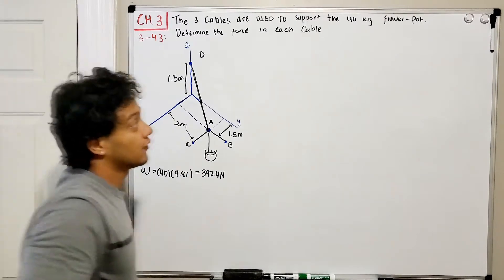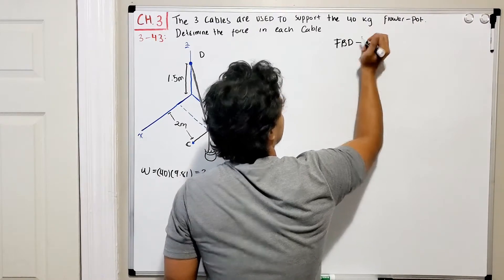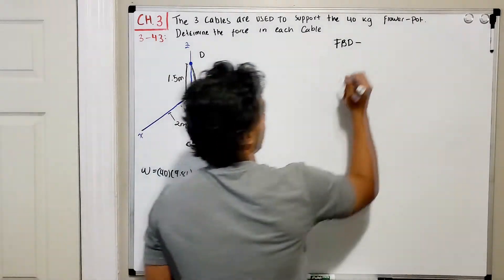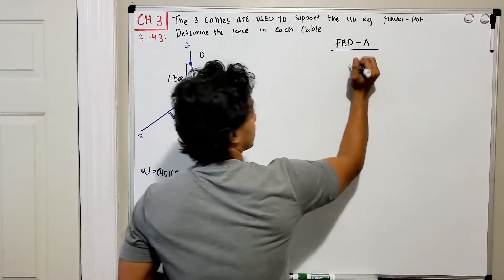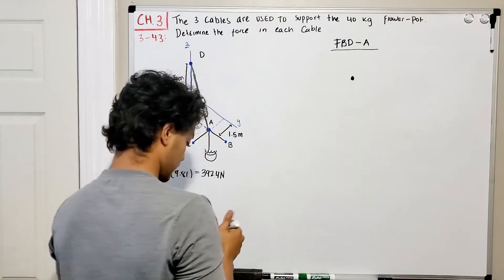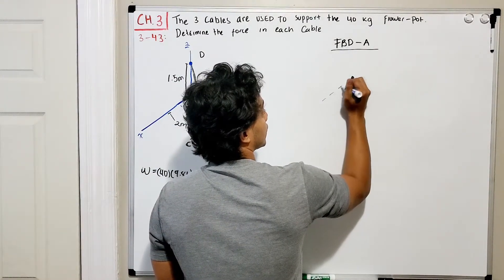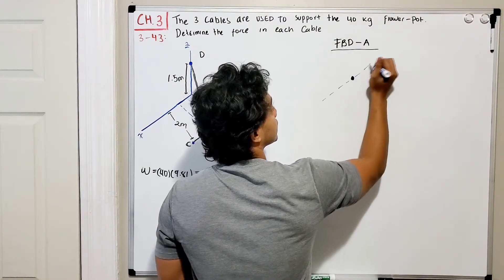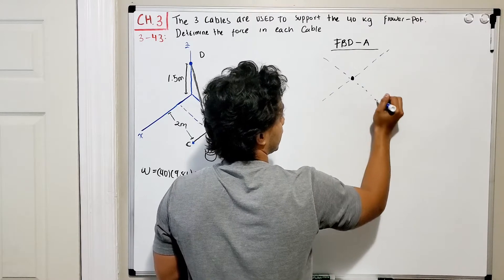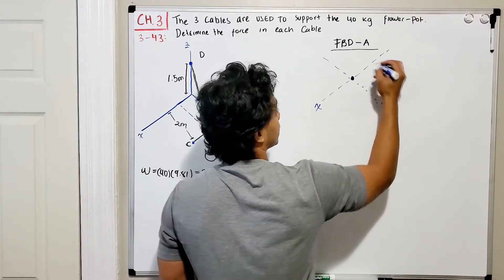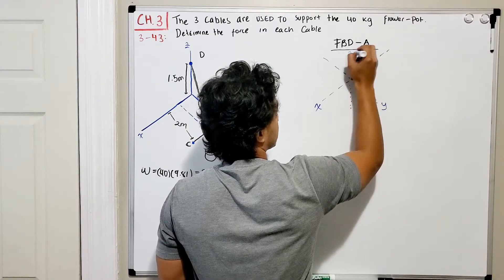Now as usual, let's draw a free body diagram of this example at point A — our point of interest. Since this is a 3D problem, let's sketch the coordinate system so we don't get confused about directions. We have the X direction, the Y direction, and the Z direction.